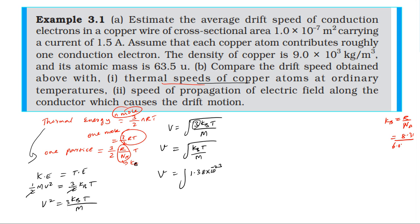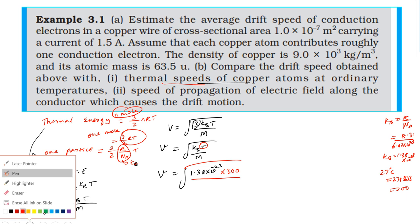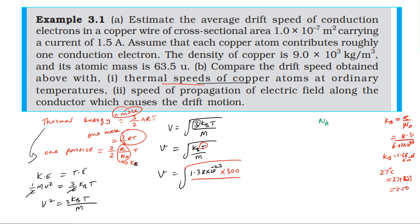Universal gas constant is 8.314, and Avogadro's number is 6.02 × 10²³, giving k = 1.38 × 10⁻²³. Temperature is 300 Kelvin. Mass of one copper atom equals molar mass 63.5 g divided by Avogadro's number, giving mass of one copper atom.